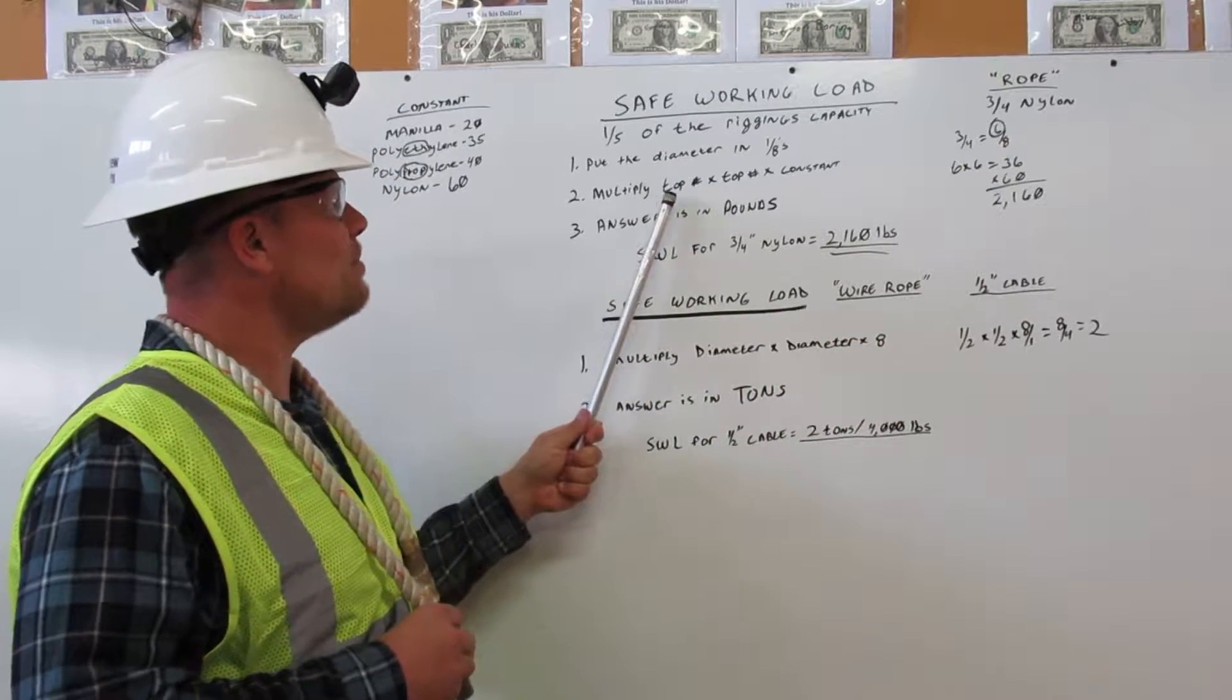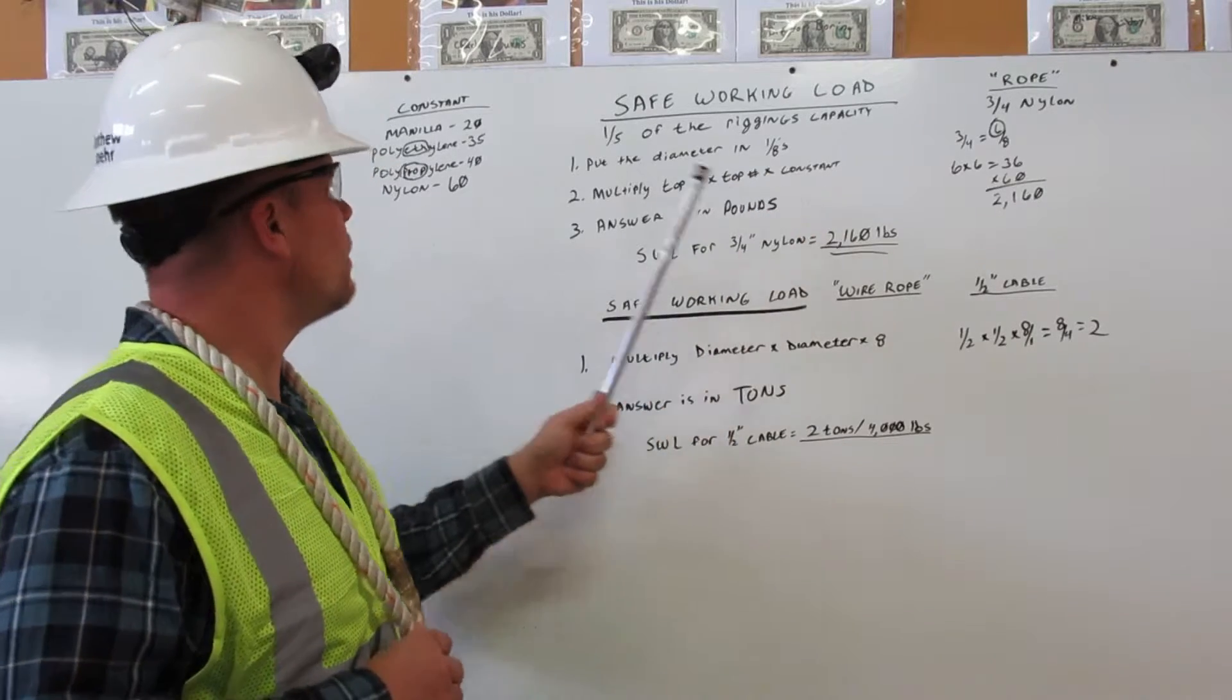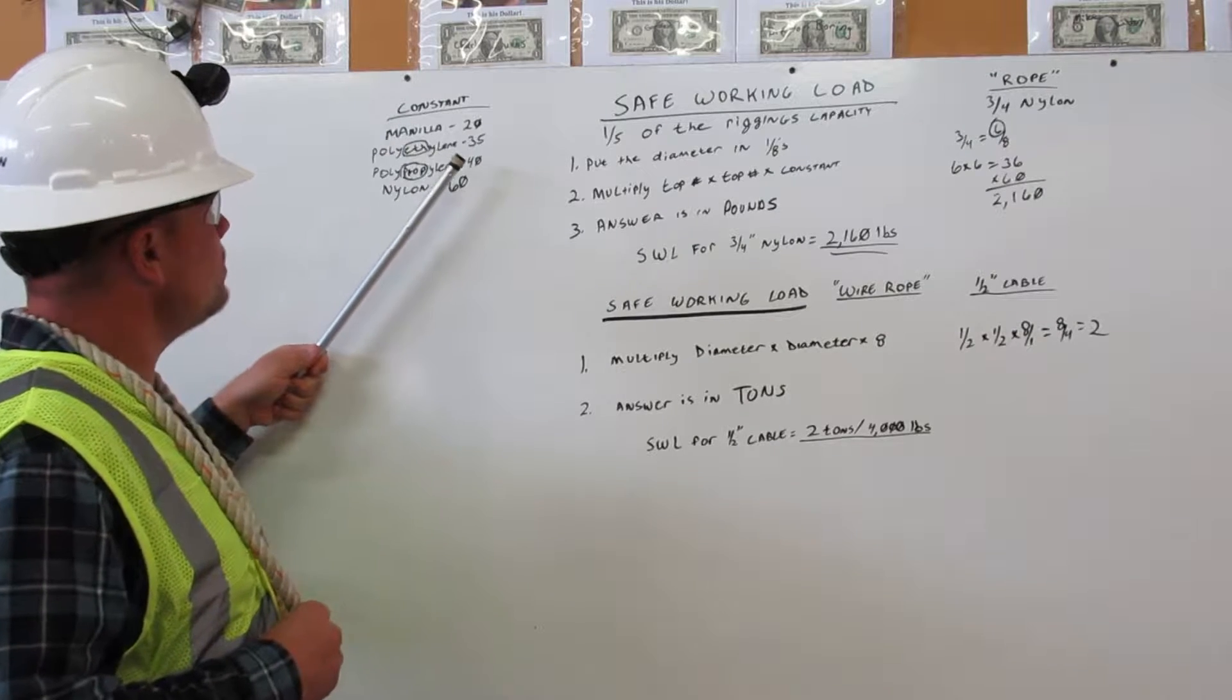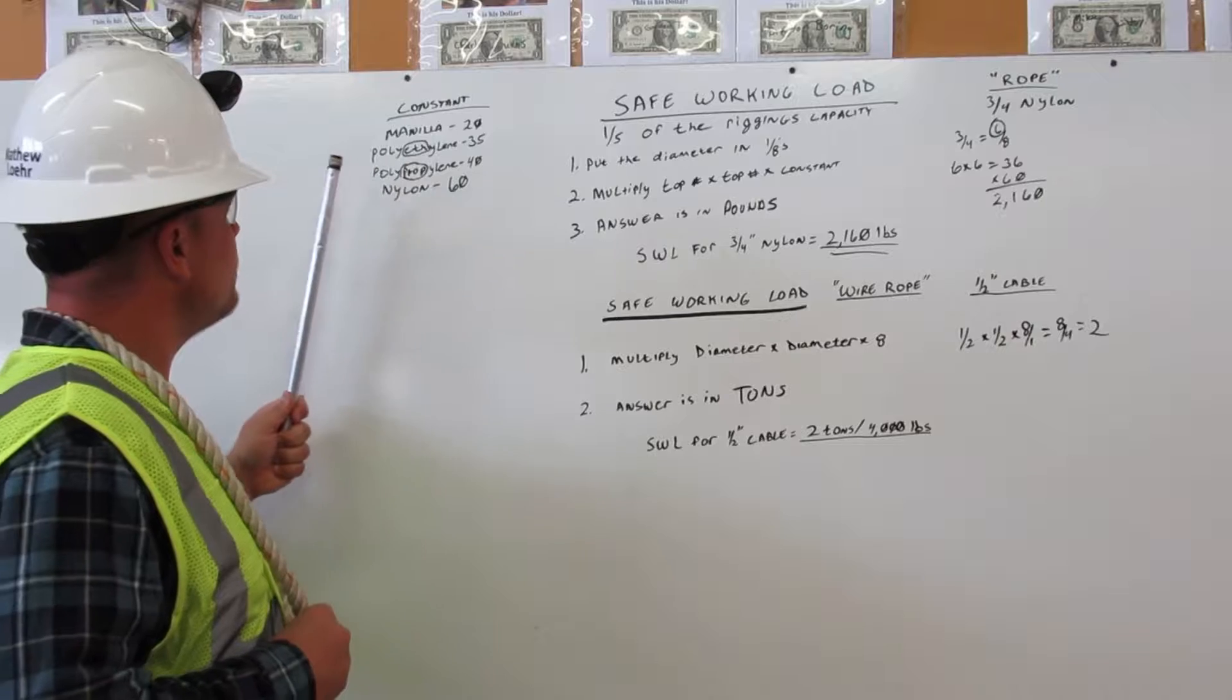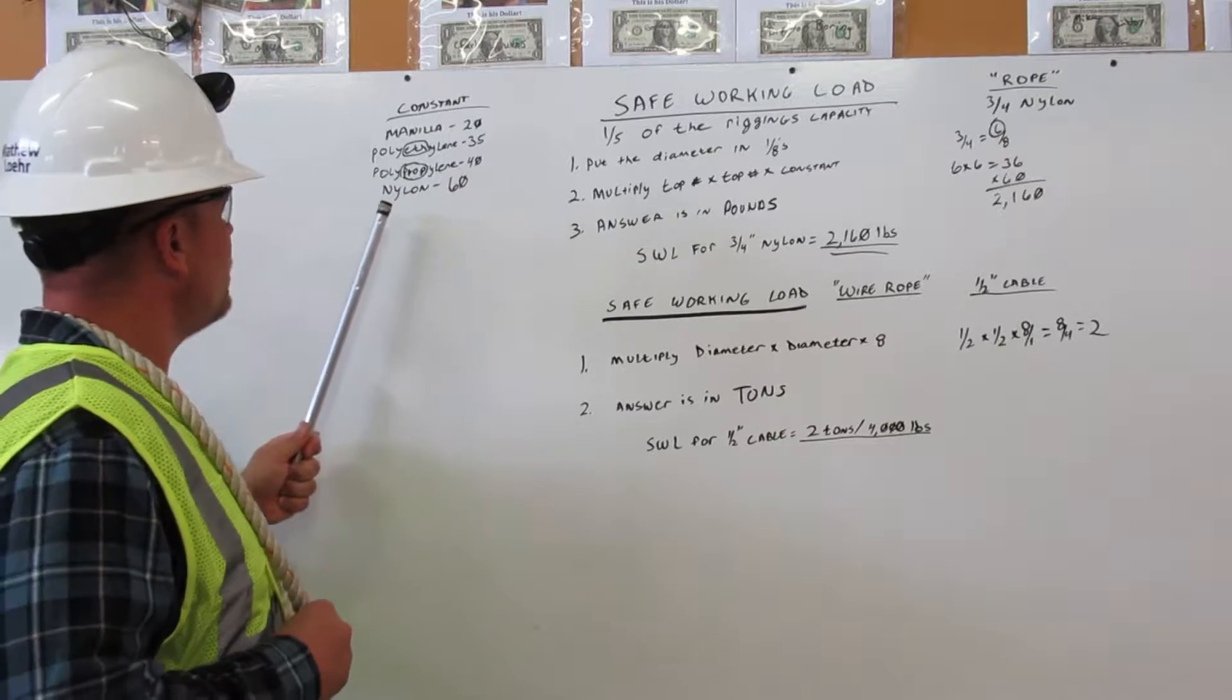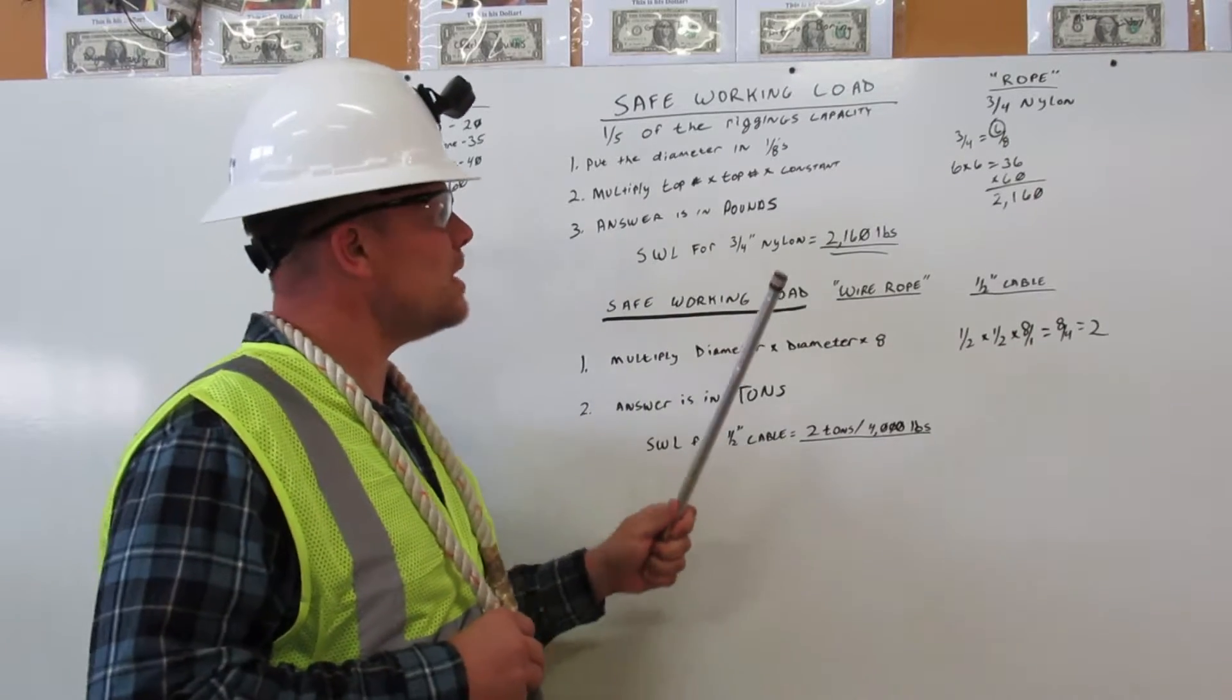Number two, you will multiply the top number times the top number times the constant. Your constants: manila is 20, polyethylene is 35, polypropylene is 40, and nylon is 60. So back to our example,